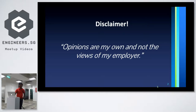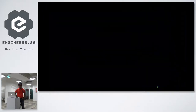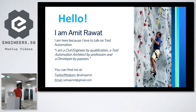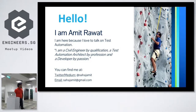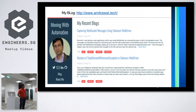I'm Amit Rawat. I'm a civil engineer by qualification but I work as a test automation architect for one of the investment banks, and my passion is development. In my free time I try to develop a lot of stuff. You can find me on Twitter and Medium — my handle is @sahajamit — and that's my website. I also have a personal blog where I write interesting articles related to test automation.